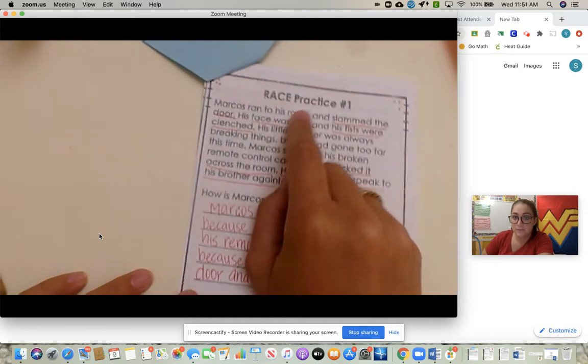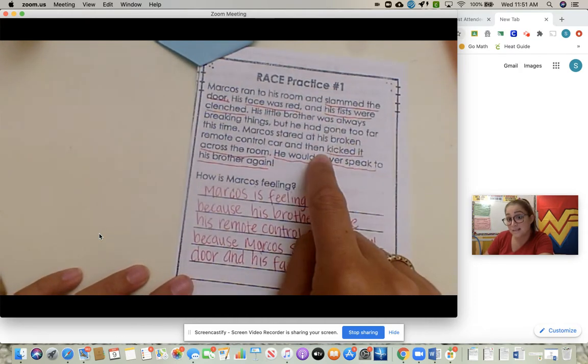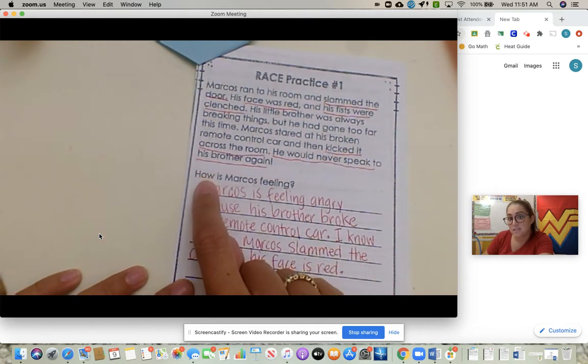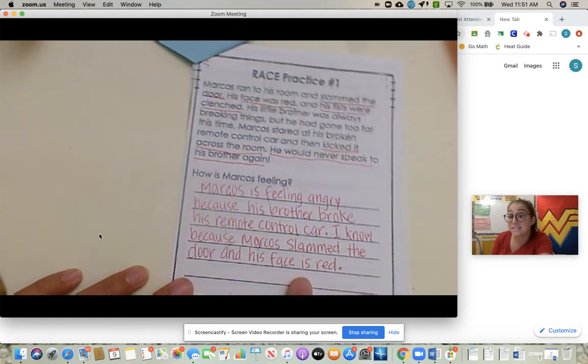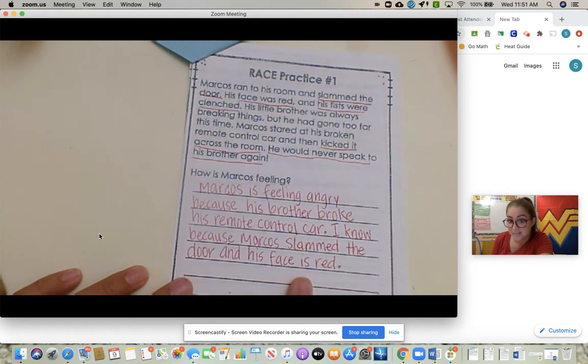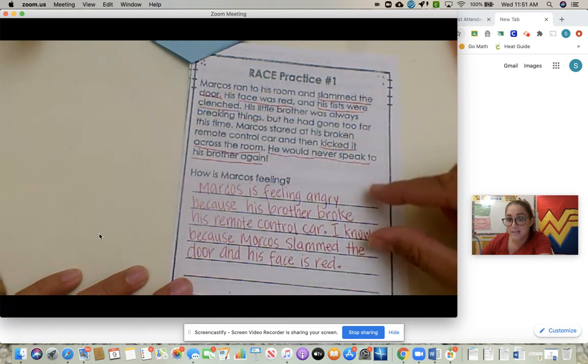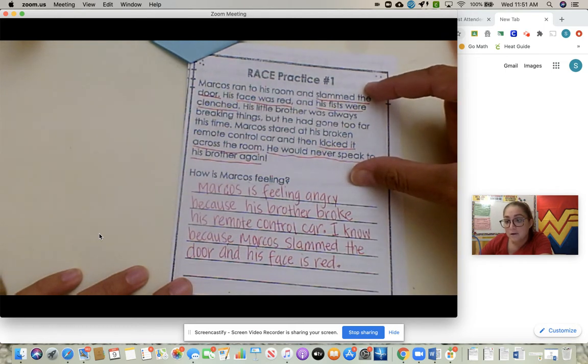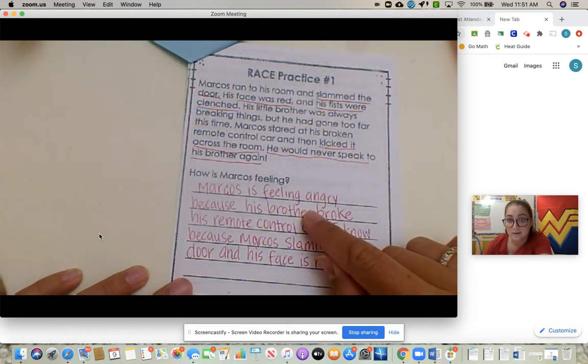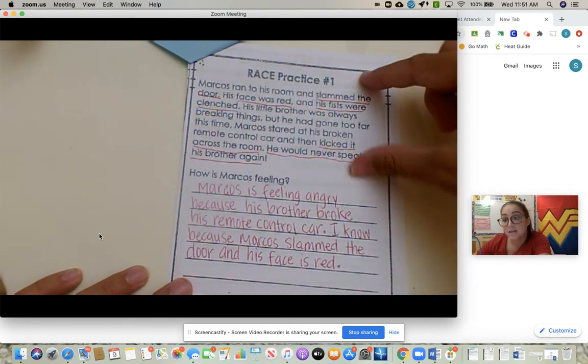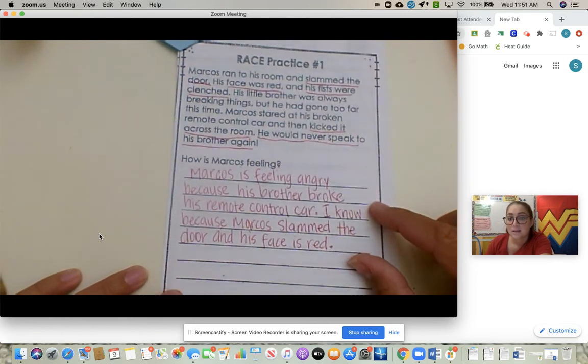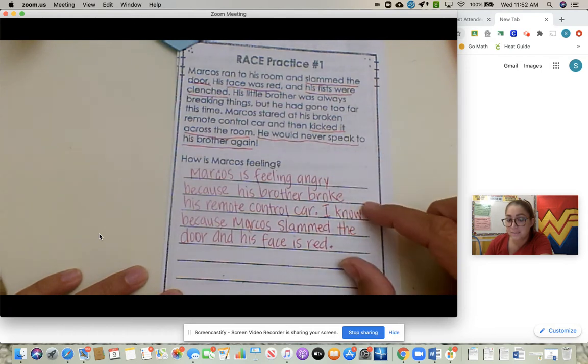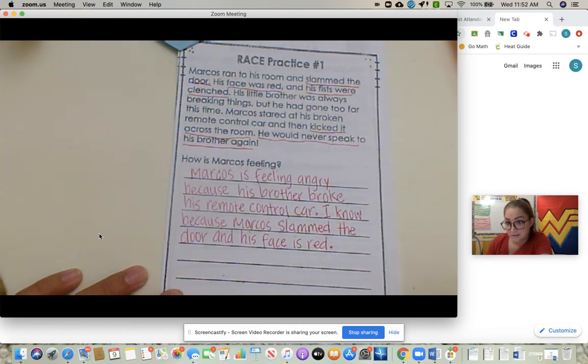So we turn to RACE practice one. We read it twice. And the question is, how is Marcos feeling? So here's the answer. We restated the question. And then we went back and answered the question, how is he feeling? Then we went back to the text to figure out, how do we know he was feeling that way? What evidence proves that he was angry? And we underlined the evidence we found. We needed to write at least two pieces of evidence. That is what we did.